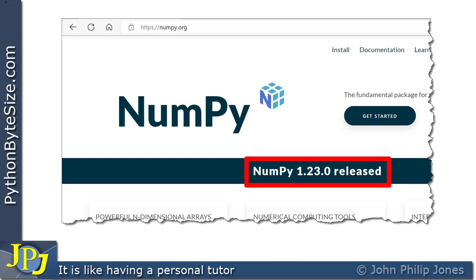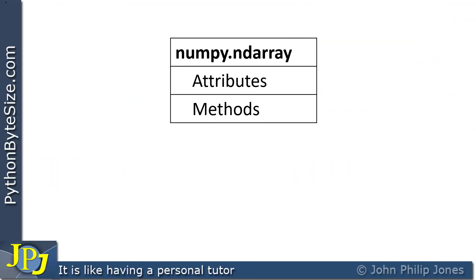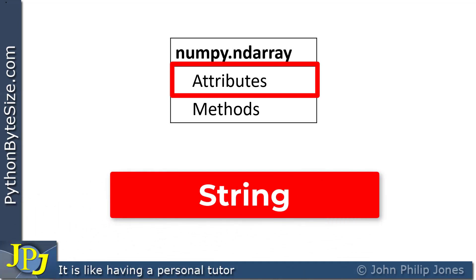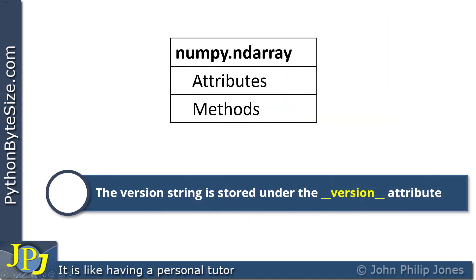You need to compare this version to the version that you've got on your computer system. This diagram can be a good way to represent a class. To find out what version you currently have on the computer, we can look to a specific attribute. In the case of Numpy, this attribute gives access to a string that holds the version number for the current version of the Numpy module you have installed.